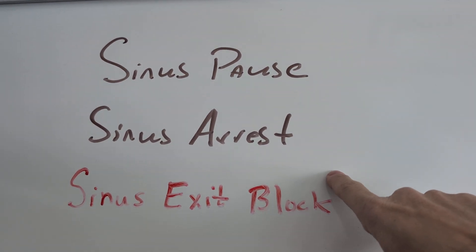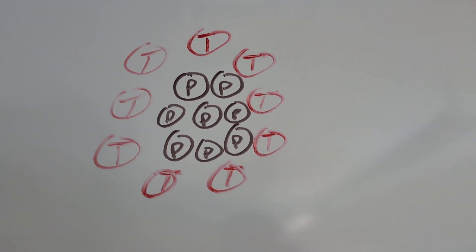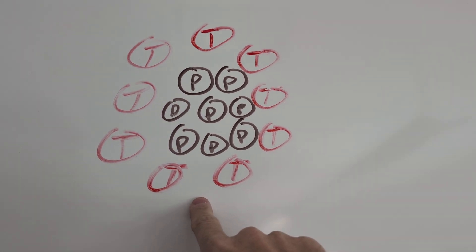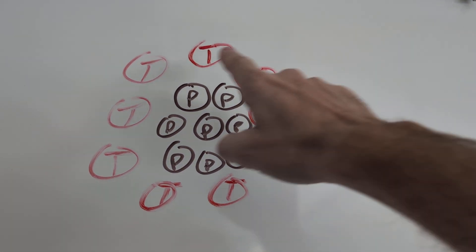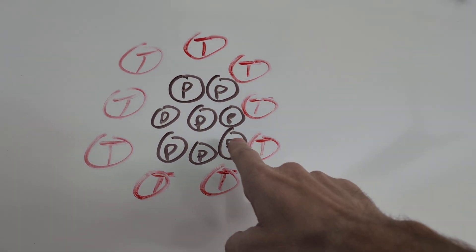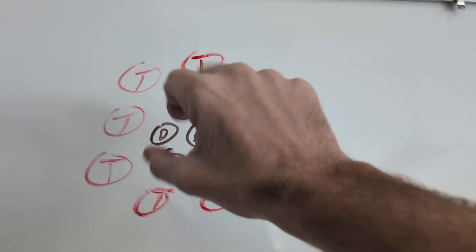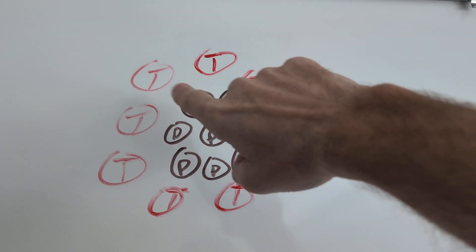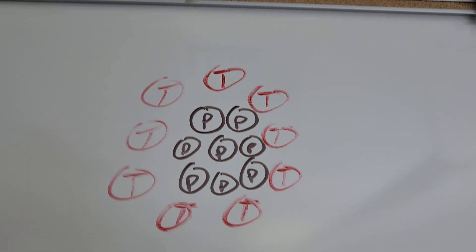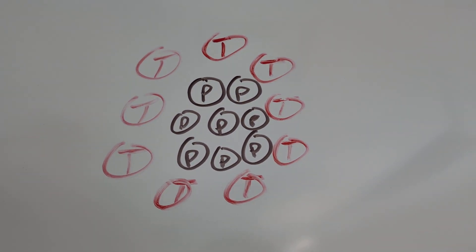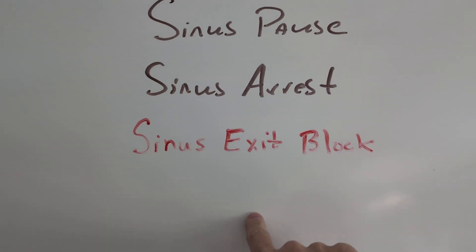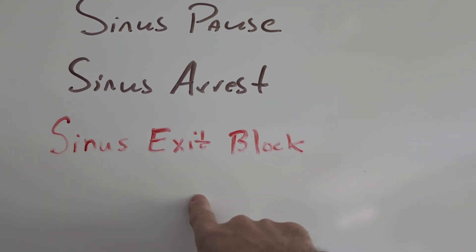The other problem that you can run into is failure of these T cells to transmit the impulses that are being generated by the P cells. So the P cells are firing, but that signal is not being transmitted by the T cells. And when that occurs, we call this a sinus exit block.